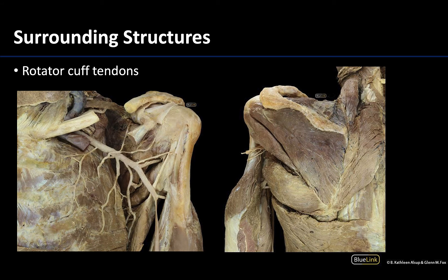A major player in the shoulder joint region are the rotator cuff tendons, which form a nearly complete cuff of tendon around the shoulder joint with only a slight inferior deficiency. These tendons are really the major source of stability to this region. You can follow the muscle bellies of these muscles laterally — you can see three of them here, each a rotator cuff muscle — and follow them laterally to where things become opaque and kind of white, and that's where the tendons are.